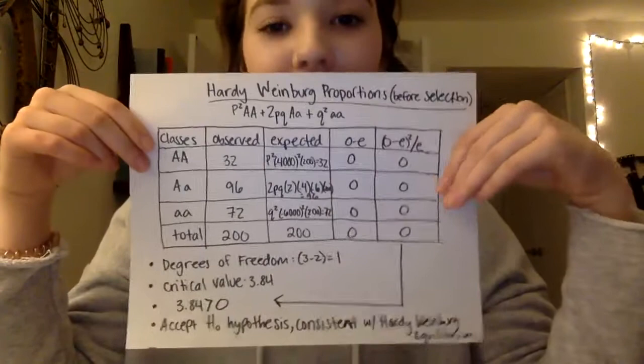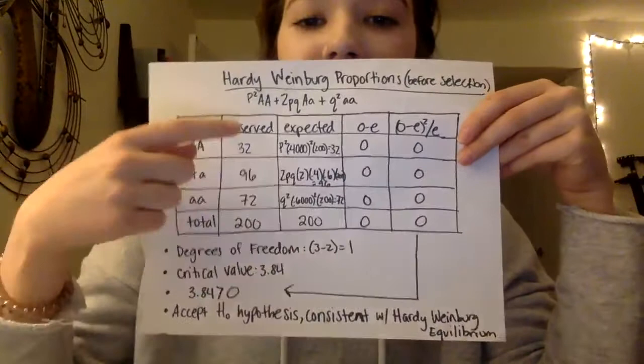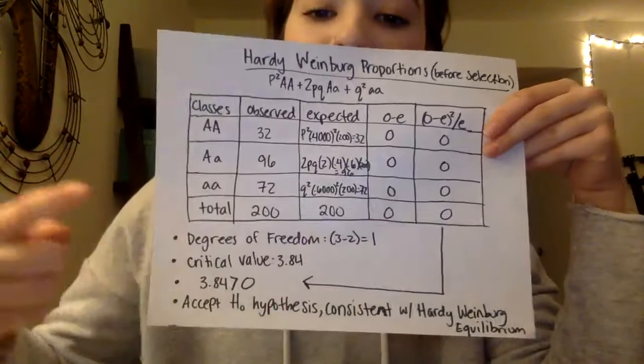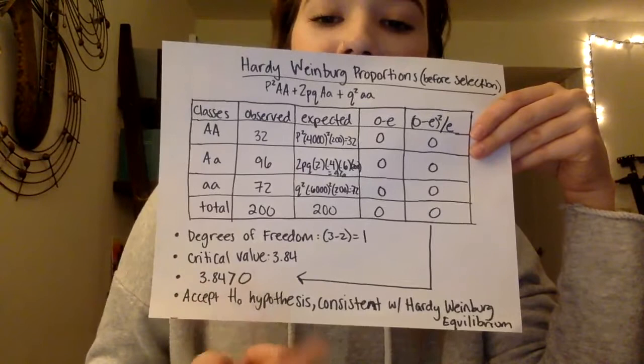We saw that the original population before the settlers came was consistent with the Hardy-Weinberg proportions. Here was the original population of birds that were observed — they were exactly the same as the expected, so when we subtracted them we found it was all 0. We checked with the critical value and found that 0 is less than 3.84, so we accepted the null hypothesis and found the original population was consistent with the Hardy-Weinberg proportions.